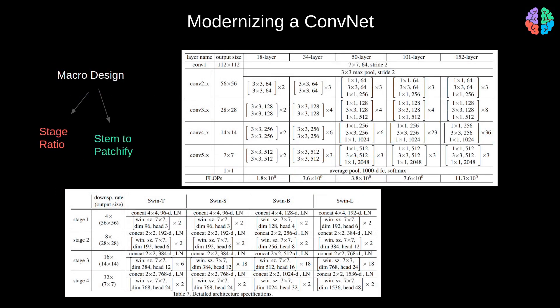Moving on to macro design — changes to the entire network inspired by Swin Transformer. ResNet-50 has four stages with blocks repeated at a ratio of 3:4:6:3, whereas Swin Transformer uses a ratio of 1:1:9:1. Inspired by this, they changed the number of blocks in ResNet to follow this ratio, improving accuracy from 78.8 to 79.4.